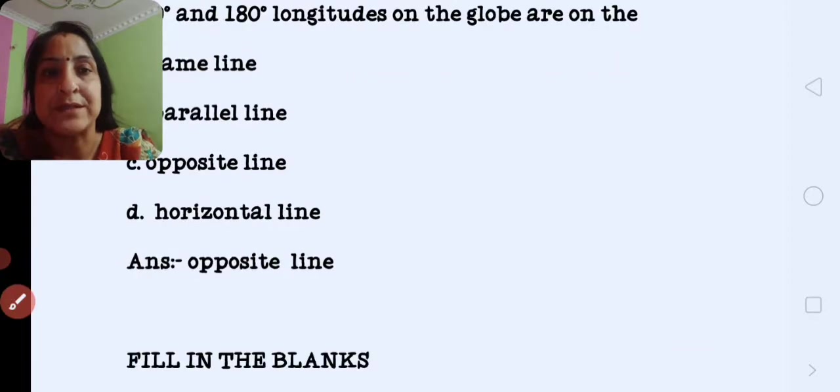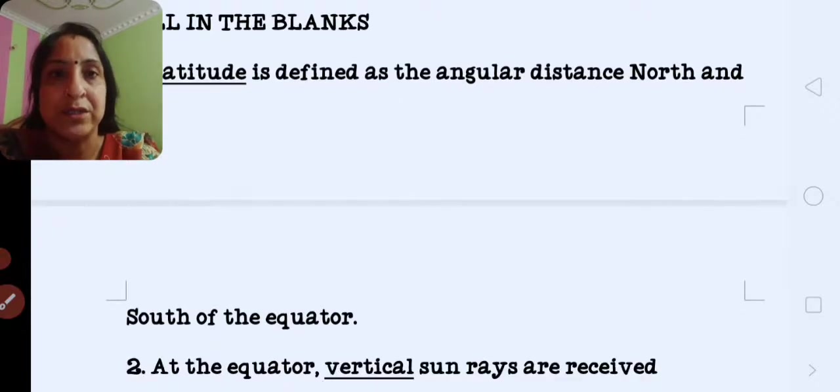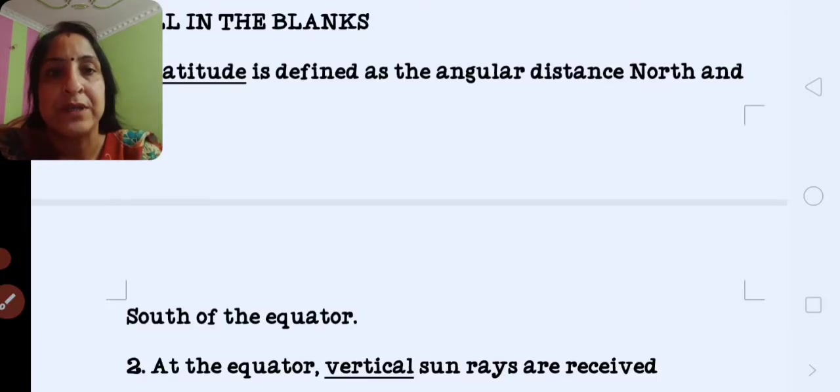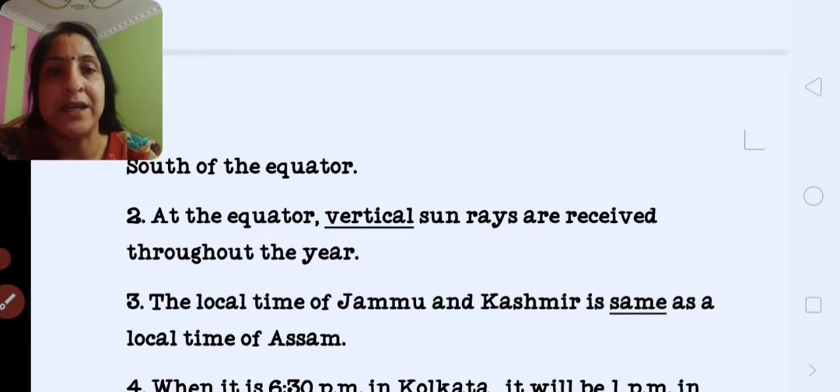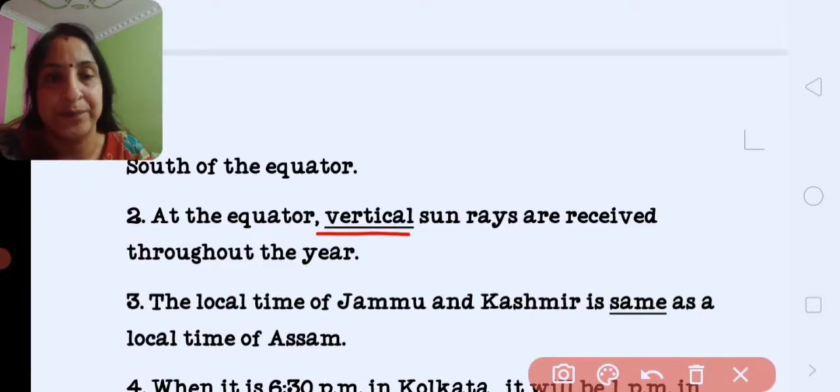Next is fill in the blanks. First is dash is defined as the angular distance between north and south to the equator. Correct answer is latitude. Second is at the equator, dash sun rays are received. Always vertical on the equator throughout the year.